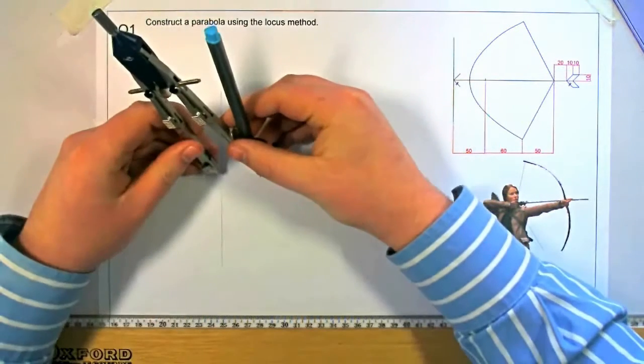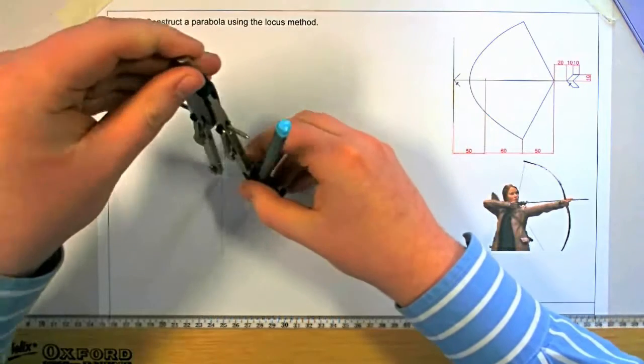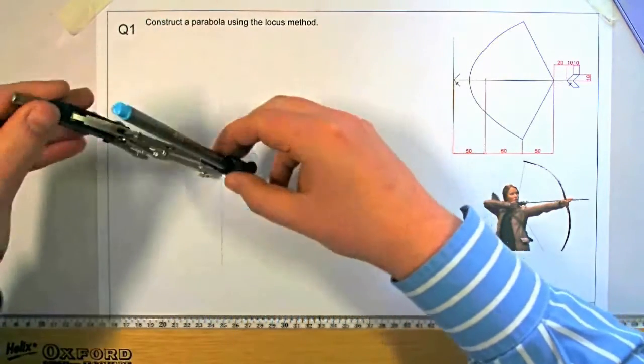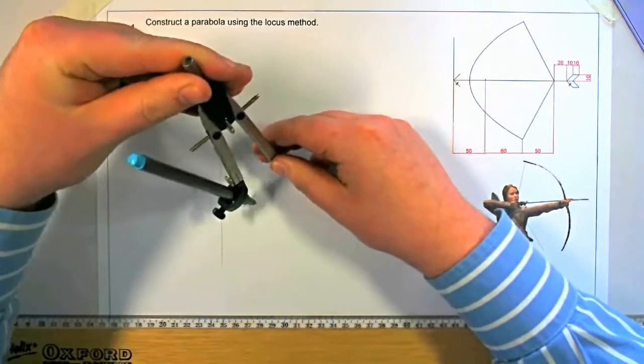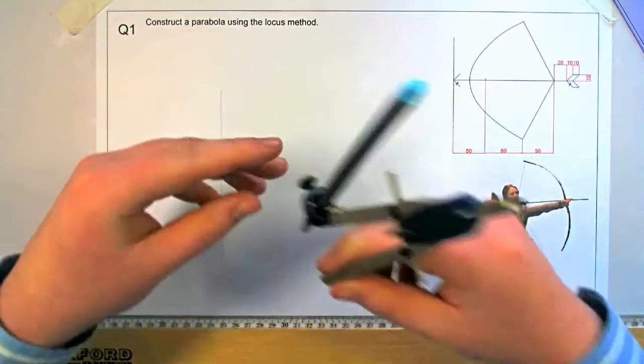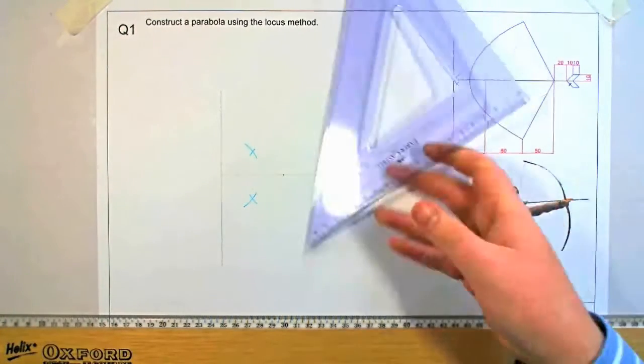Now if we bisect this line of 50mm and project the line down through where the line cuts the other one, it gives us a point on our parabola.